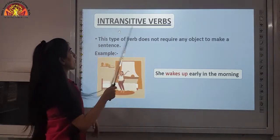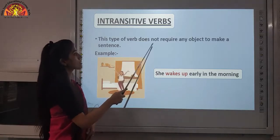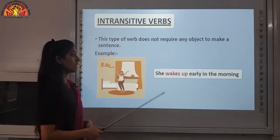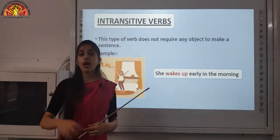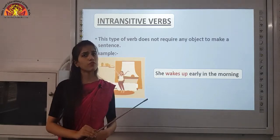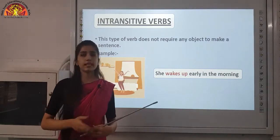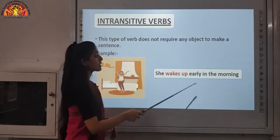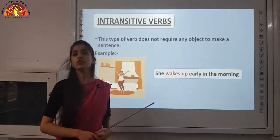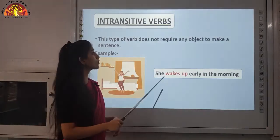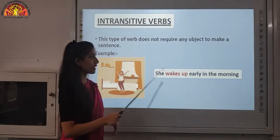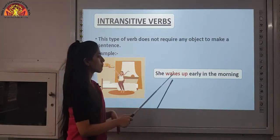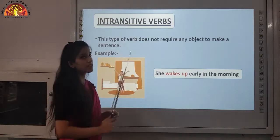An intransitive verb does not require any object to complete its meaning. For example: she wakes up early in the morning. Here there is no object, yet the sentence is complete and gives a full meaning. So wakes up is an intransitive verb.